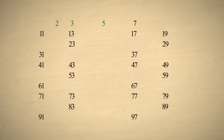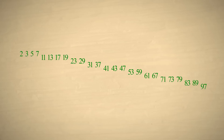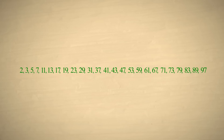Now the next number in our list, seven, will be prime. We then eliminate all the numbers divisible by seven. We can stop testing prime numbers once we reach a number which, when multiplied by itself, is greater than the highest number remaining in our list. The next number, eleven, multiplied by itself, is greater than ninety-seven, so we can stop testing. We have eliminated all the composite numbers — any remaining numbers are prime.